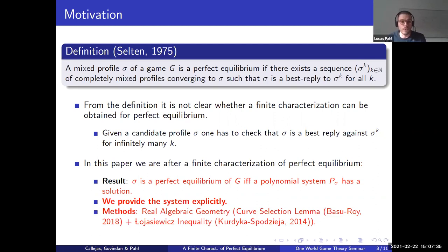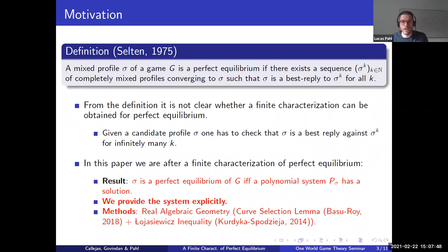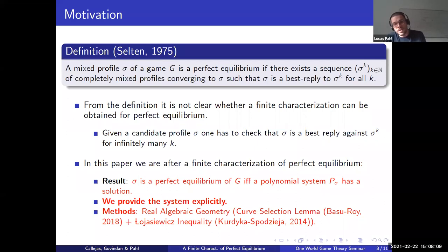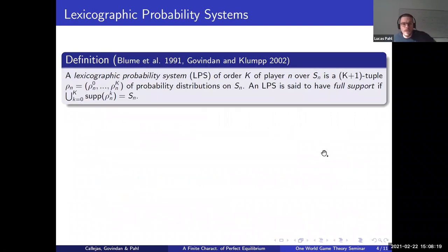The methods we use come from two recent results in real algebraic geometry. One is the curve selection lemma proved by Basu and Hua in 2018 — a classical result for which they provided a quantitative version, giving estimates for certain constants that are only known to exist. The same applies to the Łojasiewicz inequality of Kurdyka and Sportjeza, where they show estimates for certain quantities that are otherwise only known to exist. We are going to use these estimates to prove our theorem.